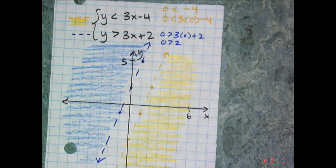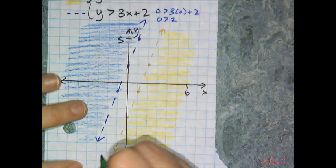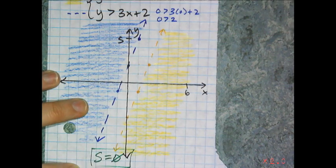And remember, the solution to a system of inequalities is the region of overlap. And there is no region of overlap, so this one has a solution set that is empty.